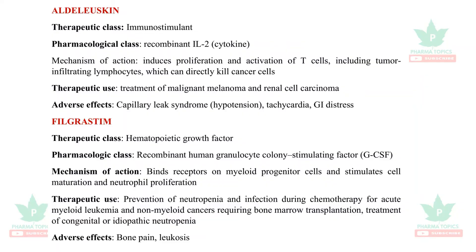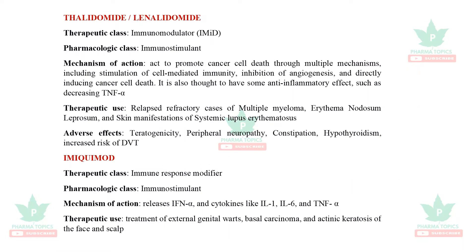Filgrastim is a hematopoietic growth factor — the granulocyte colony-stimulating factor (G-CSF). It binds to myeloid cells and stimulates cell maturation. It is used to prevent neutropenia and infection during chemotherapy of chronic myeloid leukemia. It is also used in HIV patients when WBC counts reduce, and in treatment of congenital or idiopathic neutropenia.